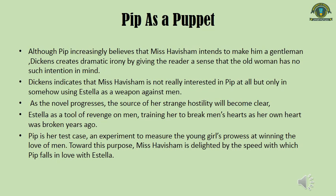Although Pip increasingly believes that Mrs. Havisham intends to make him a gentleman, Dickens creates dramatic irony by giving the reader a sense that the old woman has no such intention. Dickens indicates that Mrs. Havisham is not really interested in Pip at all, but only in using Estella as a weapon against men. Estella is a tool of revenge, trained to break men's hearts as her own heart was broken long ago. Pip is her test case — an experiment to measure the young girl's prowess at winning the love of a man. Mrs. Havisham is delighted by the speed with which Pip falls in love with Estella.